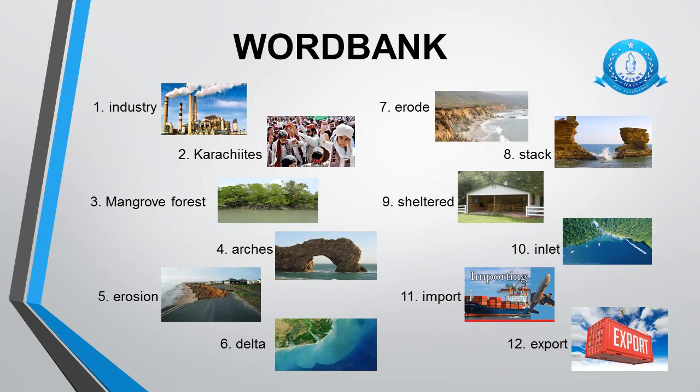Let's start our word bank. Here I have given you pictures with these words for your convenience. Listen to the pronunciation of these words and I will tell you meanings of difficult words. The first word is industry. Second word is Karachiites — people who live in Karachi are known as Karachiites. Third word is mangrove forest — mangrove forests have trees that live along tropical coastlines, as you can see in the picture. Fourth word is arches — an arch is a vertical curved structure, curved from top and hollow from inside.